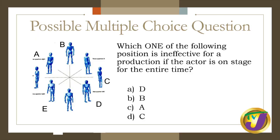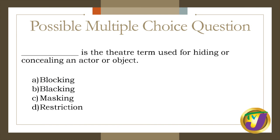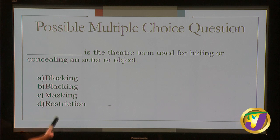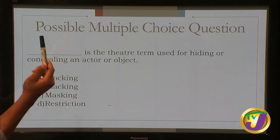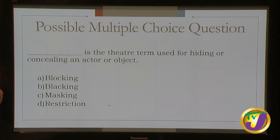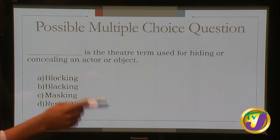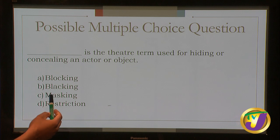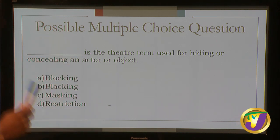Question four: what is the theatre term used for hiding or concealing an actor or object? Options: Blocking, Masking, Restriction, Elimination. Blocking has to do with instructions and activities carried out by actors from the director. Restriction sounds too far off. Masking, however, means hiding something — so the answer is Masking.